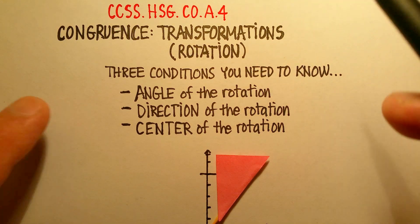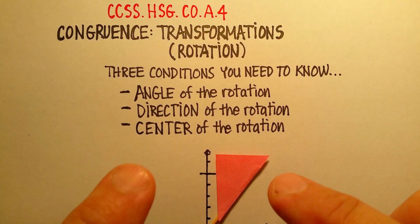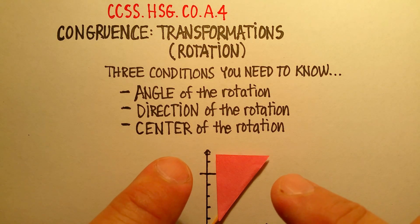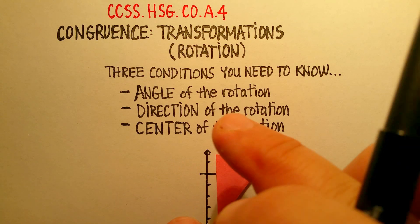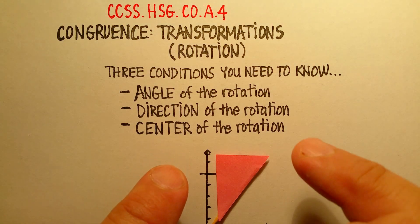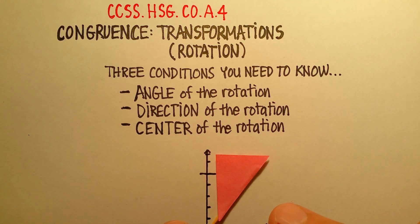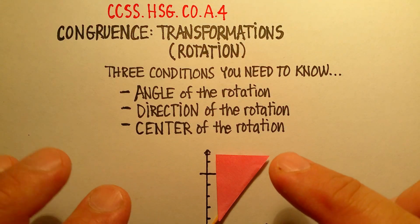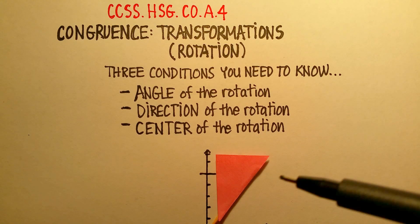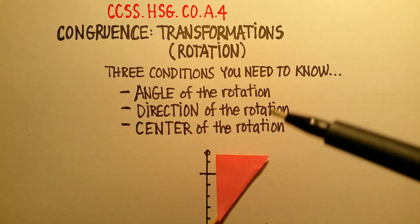Rotation pretty much means exactly what you think it means. It's basically taking an object like this one that I have here, and you're rotating it — pivoting it in either direction, counterclockwise or clockwise, around a particular point, and changing its location, usually along the xy-axis.